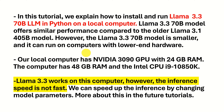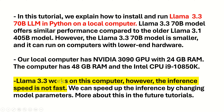Our local computer has an NVIDIA 3090 GPU with 24GB RAM, 48GB of regular RAM, and an Intel CPU i9. LLAMA 3.3 works on this computer, however the inference speed is not fast. We can speed up the inference by changing the model parameters, and more about this in future tutorials.